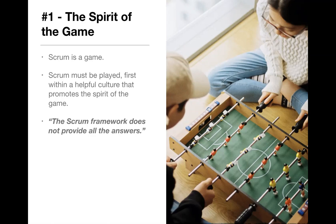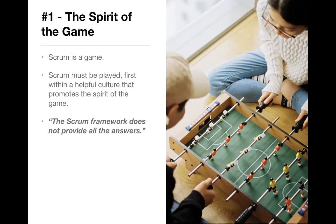Another key idea is that the Scrum framework does not provide all the answers — maybe it cannot, maybe it chooses not to. In any case, it does not provide all the rules, particularly in the 18 pages. You have to provide additional answers for your team in terms of how you play the game. That's a key concept in that section, and a good thing to start with.